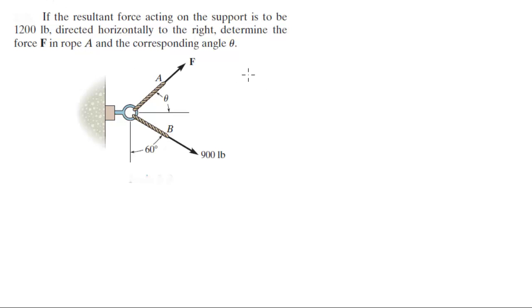All right guys, now we're gonna do this problem which says if the resultant force acting on the support is to be 1200 pounds directed horizontally to the right, determine the force F in rope A and the corresponding angle.